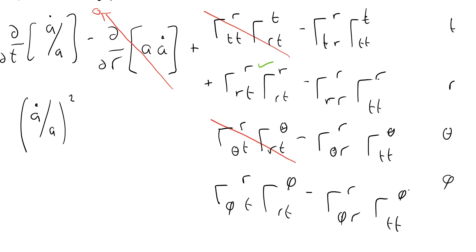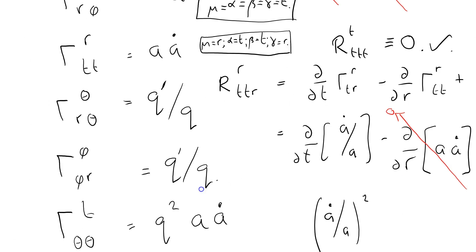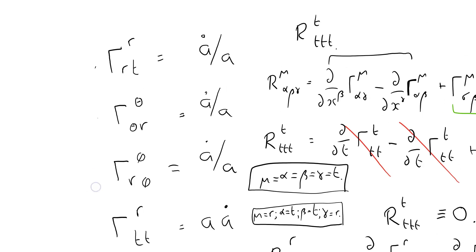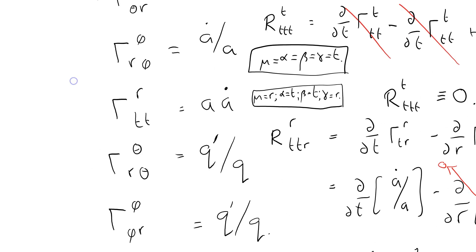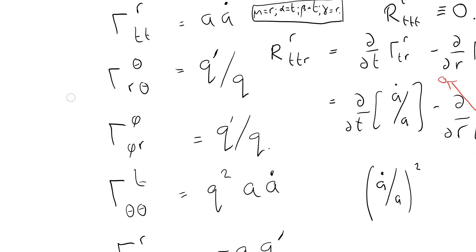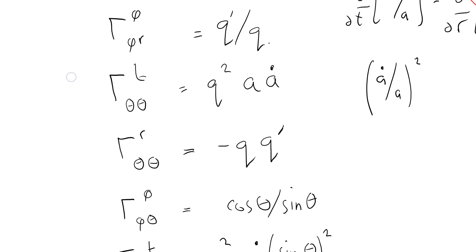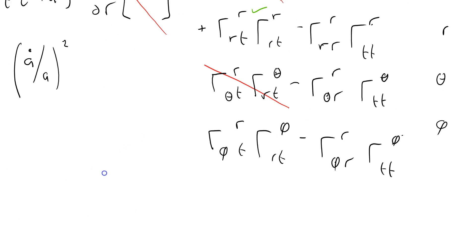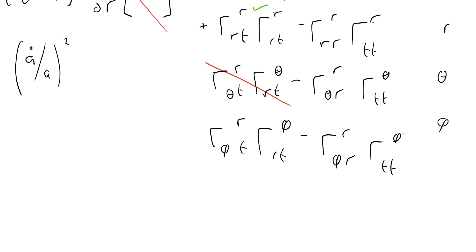Christoffel(R, phi, T) - is that on my list anywhere? No, I don't think it is. It's not on my list, so that's a zero as well. Cancel that one out.